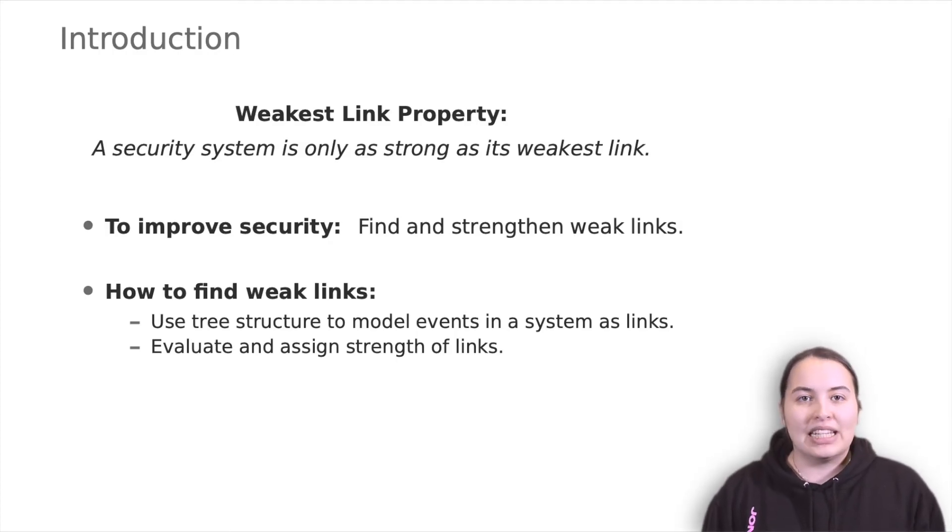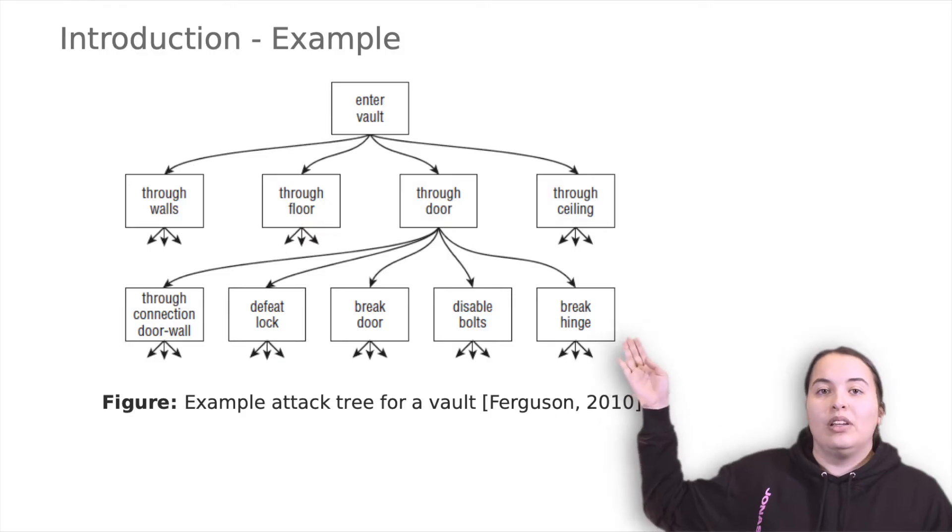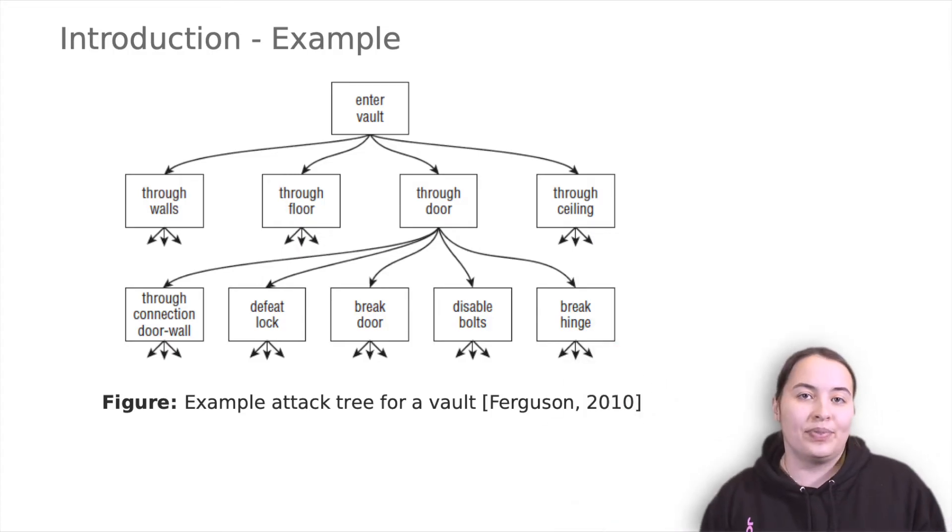So let's have a look at an example. Let's say we want to break into a vault. The first level links are the walls, the floor, the door and the ceiling. Breaking through any of them gets us into the vault.